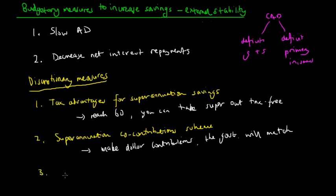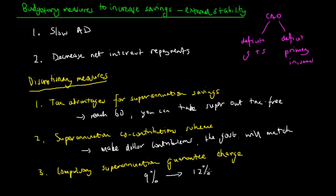Thirdly, we have a compulsory superannuation guarantee charge. This is the typical type of super when the employees pay you for your work and they contribute to your superannuation fund. The government's goal is to increase this from 9% of your income to 12% by 2019. This aim is to increase worker savings that can be drawn from time, and this is also a long term goal to encourage people not to use government transfer payments in the long term.